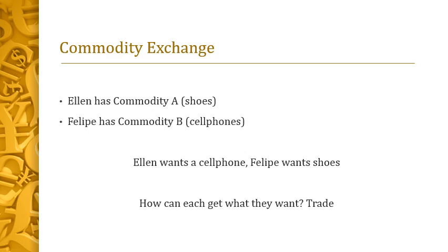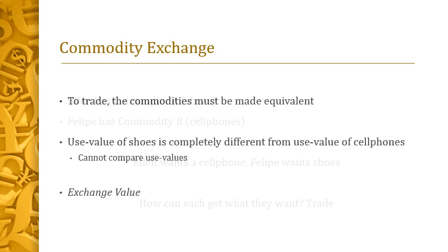But now we have a problem: how are we going to exchange these two very different things? In order to trade them, the different commodities need to be somehow made equivalent to one another — that's the only way there can be an exchange. The use values are totally different, so you can't compare them via use values. We need to express these commodities in terms of their exchange value — the value they have as commodities to be exchanged, not as objects to be used.